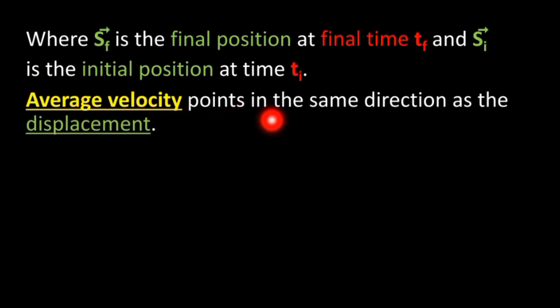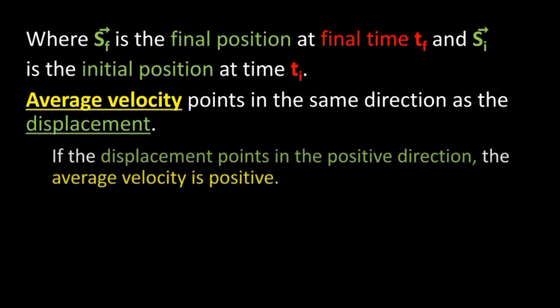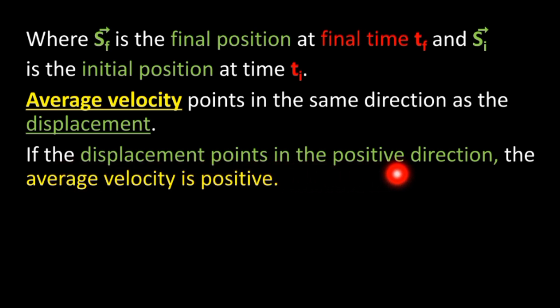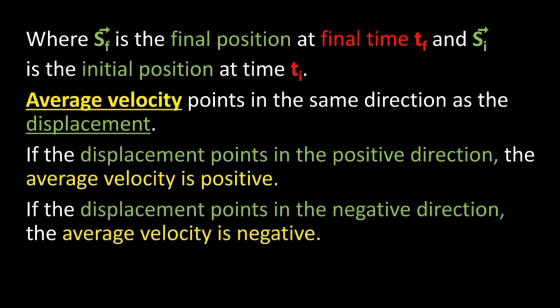Average velocity points in the same direction as the displacement. If the displacement points in the positive direction, the average velocity is positive. If the displacement points in the negative direction, the average velocity is negative.